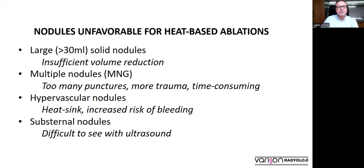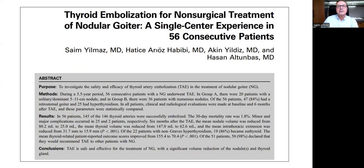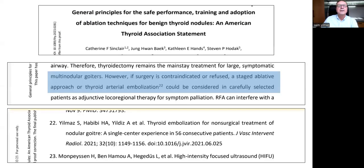And also hypervascular nodules, because of the increased risk of bleeding with ablation and the heat-sink effect. And finally, substernal nodules because of the difficulty to see with ultrasound. In such nodules, we have been using thyroid embolization for the last nine years. And in 2021, we published an article on thyroid artery embolization in JVIR. After the publication of this article, the American Thyroid Association published statements, and for the first time they mentioned thyroid artery embolization as a potential treatment for large symptomatic multinodular goiters, especially if surgery is contraindicated or refused.